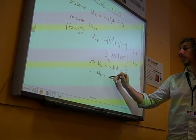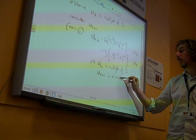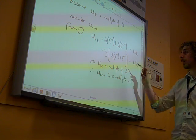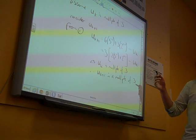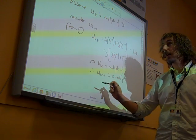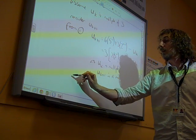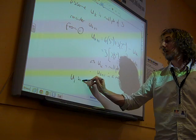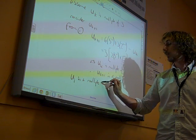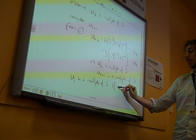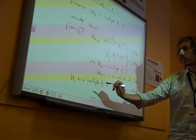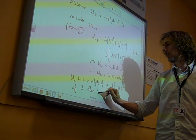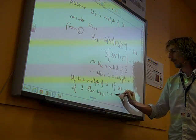Therefore, uk plus 1 is a multiple of 3. Because I'm subtracting a multiple of 3 from a multiple of 3, which will give me a multiple of 3. And now we just need to finish off with our statement at the end of it. u1 is a multiple of 3. If uk is a multiple of 3, then uk plus 1 is a multiple of 3.